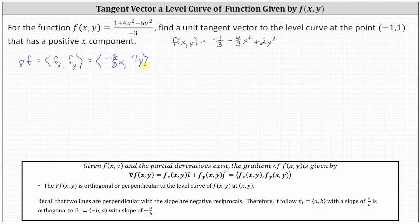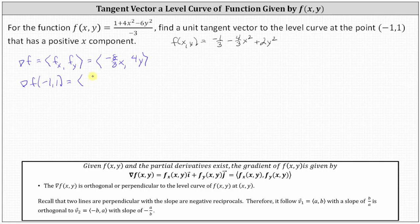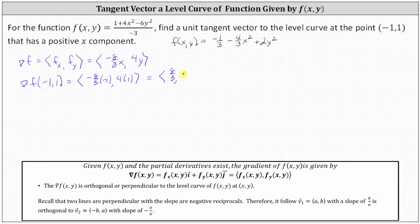Now we'll evaluate the gradient vector function at the point negative one comma one to determine a vector that is perpendicular to the level curve at that point. The x component is negative eight thirds times negative one, and the y component is four times one. Simplifying, the x component is eight thirds and the y component is four. So this vector is perpendicular to the level curve at the point negative one comma one.